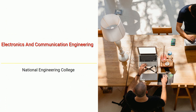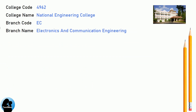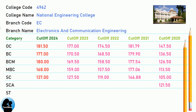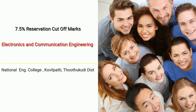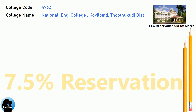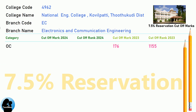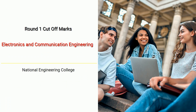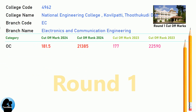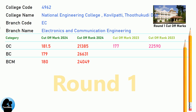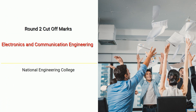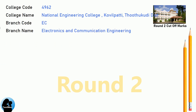DNA cut-off for National Engineering College in Electronics and Communication Engineering. DNA 7.5 Reservation cut-off for National Engineering College in Electronics and Communication Engineering. DNA Round 1 cut-off for National Engineering College in Electronics and Communication Engineering. DNA Round 2 cut-off for National Engineering College in Electronics and Communication Engineering.